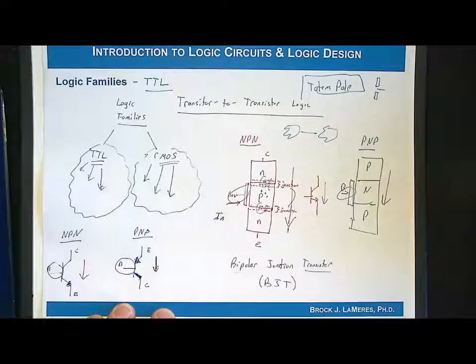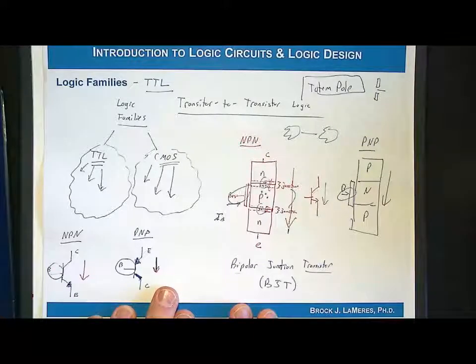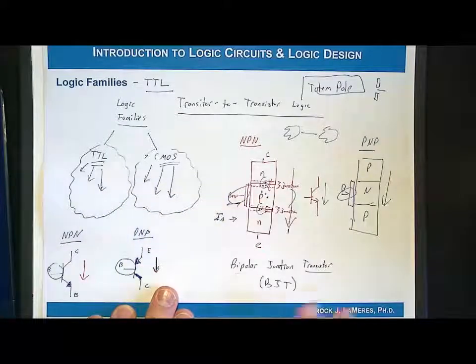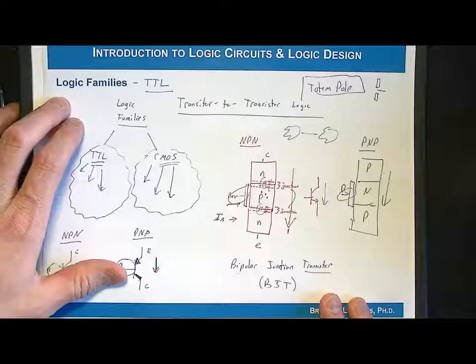This base current, even if it's small, once you start building large digital systems with 100,000 transistors or a million transistors, a million times something small is still something big. That current right there is the reason that TTL logic is not used today for large digital systems.